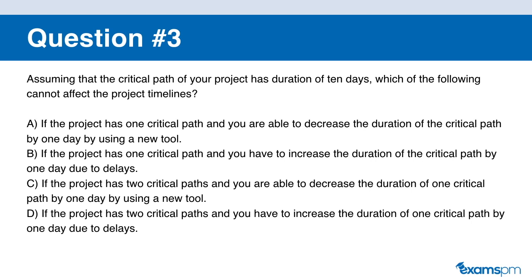Now let's move on to question number three. Assuming that the critical path of your project has a duration of 10 days, which of the following CANNOT affect the project timelines? A: one critical path, decrease duration by one day using a new tool. B: one critical path, increase duration by one day due to delays. C: two critical paths, decrease one by one day using a new tool. D: two critical paths, increase one by one day due to delays.